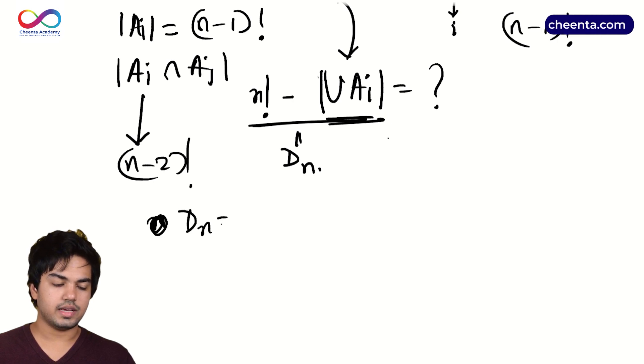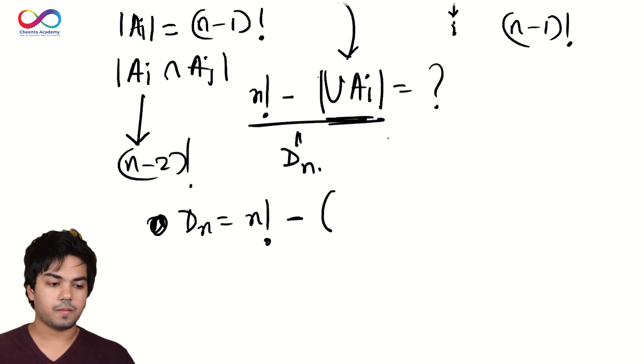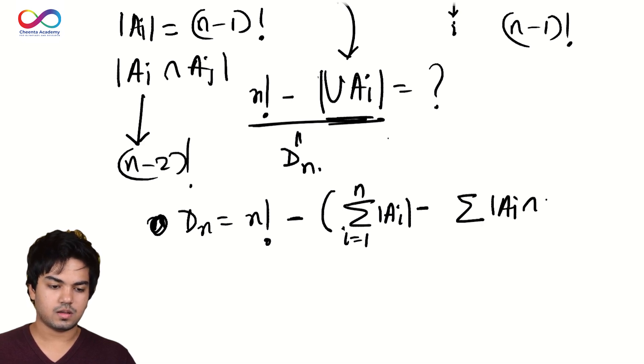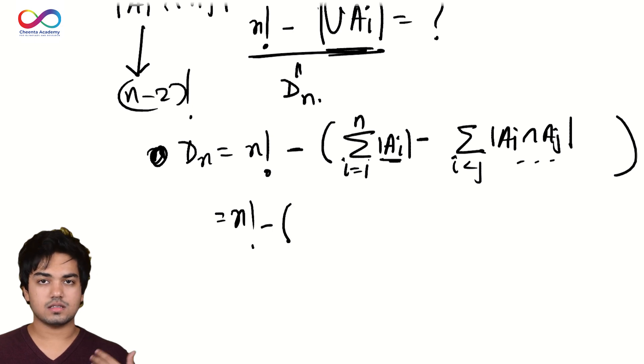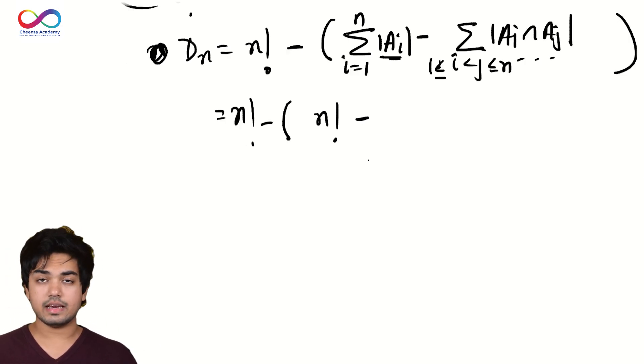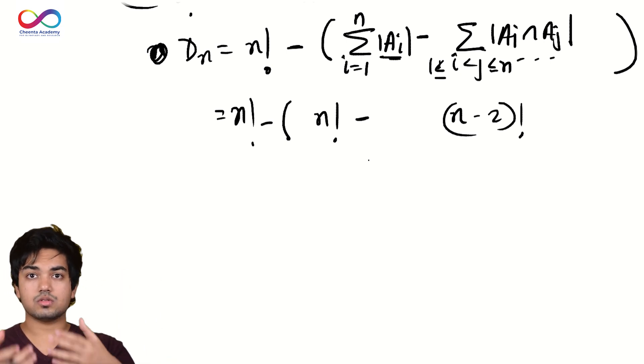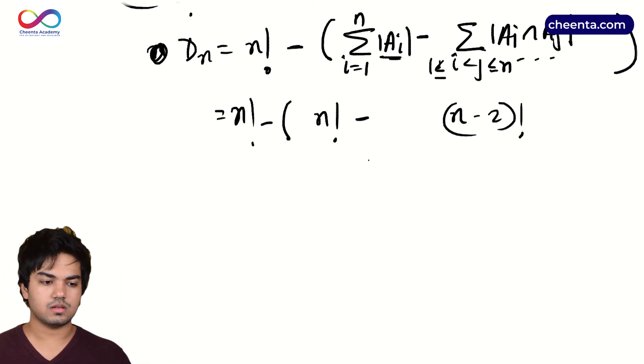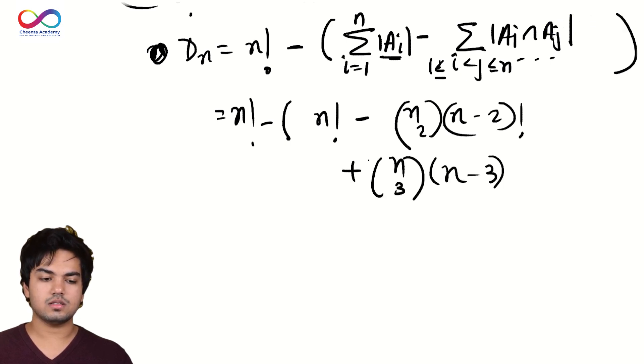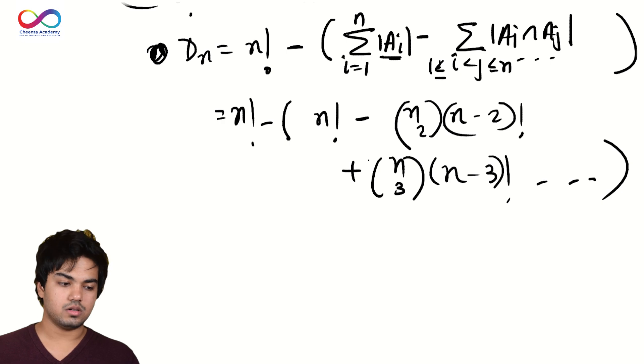So, d_N equals N factorial minus sum over |A_i|, i equals one to N, minus sum over |A_i intersection A_j|, i less than j, and so on. Right? So each of the |A_i|'s are N minus one factorial. You have N of them. So this is N factorial, N times N minus one factorial. And |A_i intersection A_j| is N minus two factorial, right? Two sets. And how many of them do we have? N choose two. You choose the two indices you want to fix, N choose two many ways to do them. Then plus N choose three times N minus three factorial, and so on.